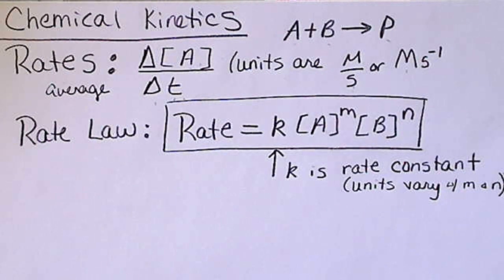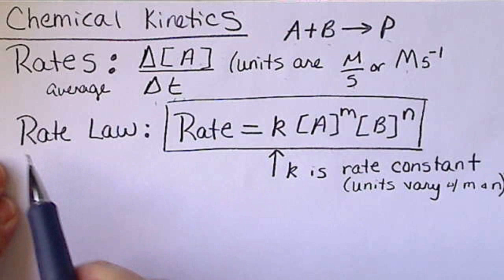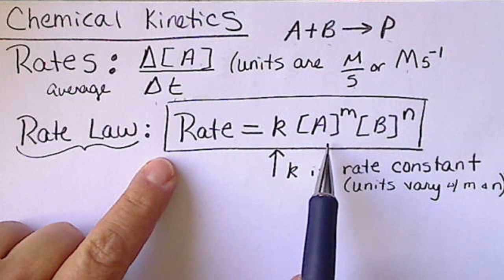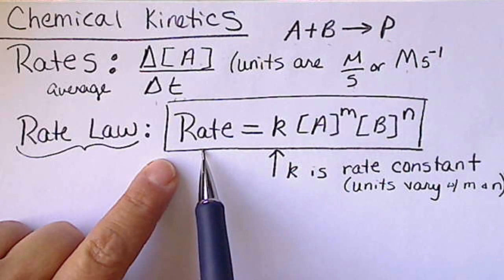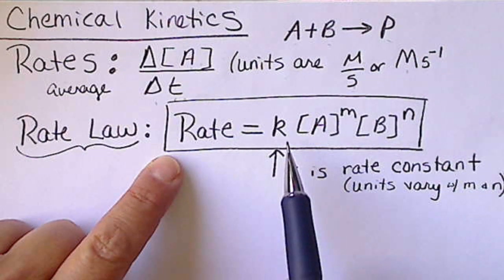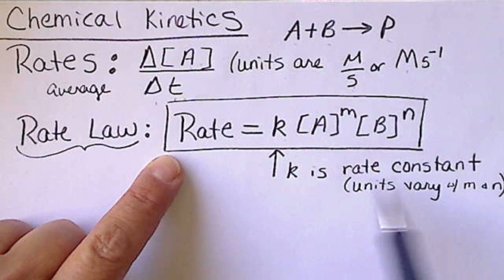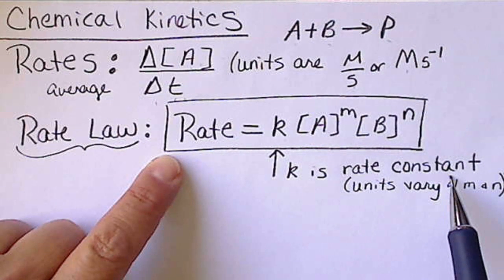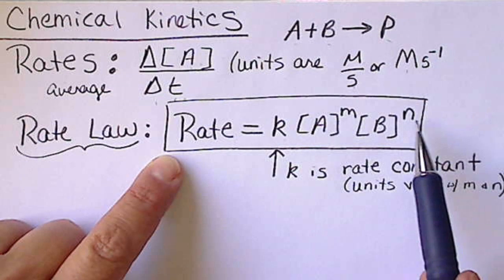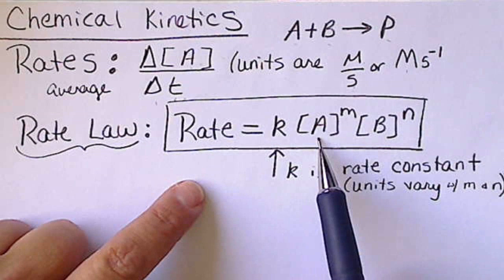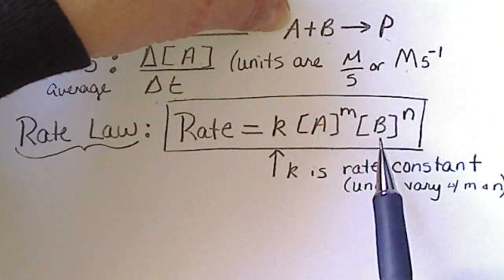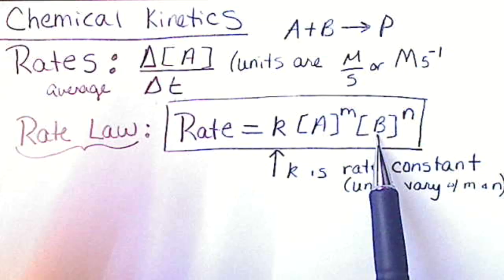We can talk about a rate law. The rate law is a mathematical equation where the rate equals K times [A]^M times [B]^N. K is a rate constant whose units vary depending on the powers M and N. A and B are the two reactants in this reaction.